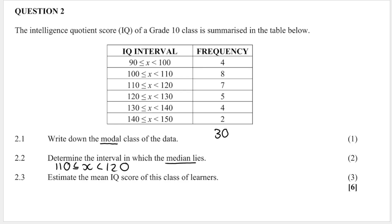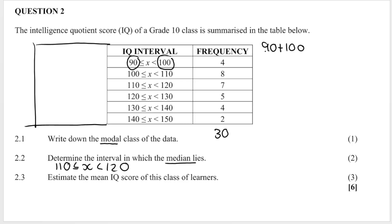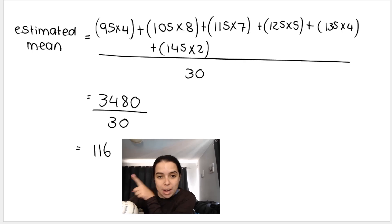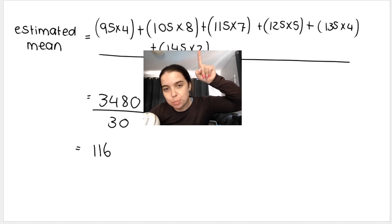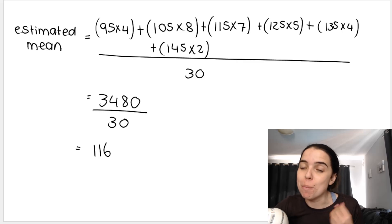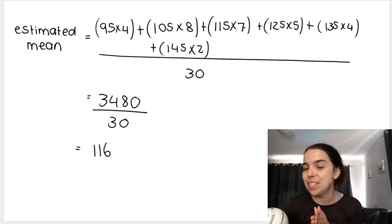For the estimated mean IQ score, we need the midpoint of each interval. For example, (90 + 100) ÷ 2 = 95, then (100 + 110) ÷ 2 = 105, and so on. We then multiply each midpoint by its frequency for all six intervals in the numerator, and divide by the total frequency. The estimated mean comes out to 116. Please check the description box for more past paper practice videos — I hope to see you soon!